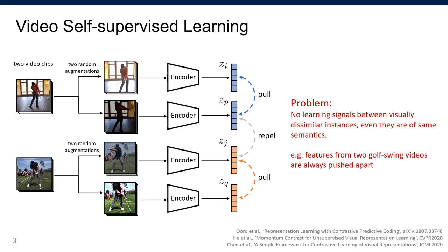However, a key problem of instance discrimination is that there's no learning signal between visually dissimilar instances, regardless of their semantics.